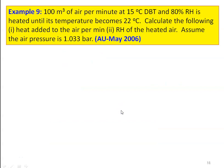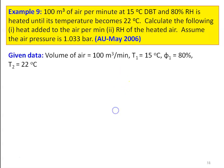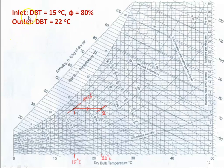Example number 9: 100 meter cube of air per minute at 15 degree Celsius dry bulb temperature and 80 percent relative humidity is heated until its temperature becomes 22 degree Celsius. Calculate the heat added to the air per minute and the relative humidity of the heated air. Assume air pressure is 1.033 bar. This is a sensible heating process. Given: volume = 100 m³/min, T1 = 15°C, φ1 = 80%, T2 = 22°C. Using the psychrometric chart, inlet condition: dry bulb temperature is 15 degree Celsius and relative humidity is 80 percent.